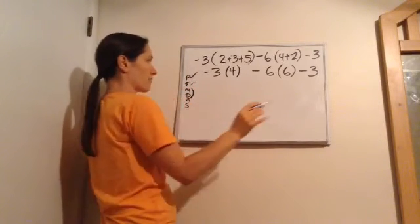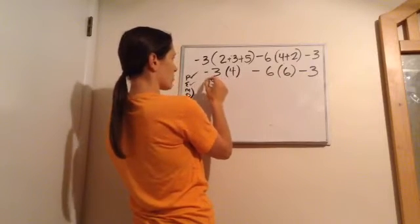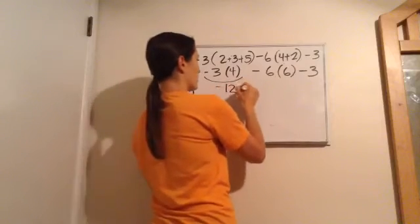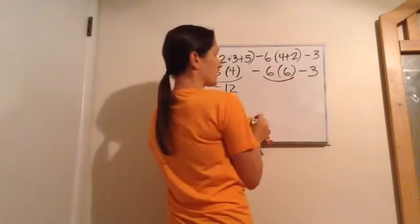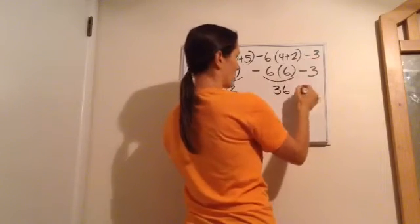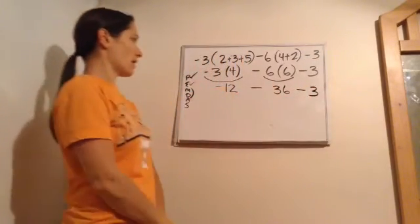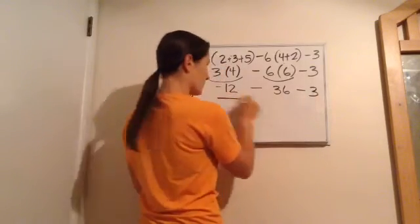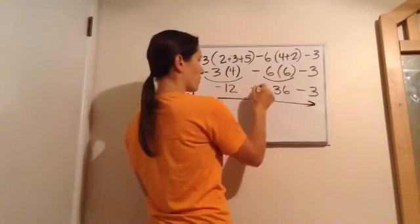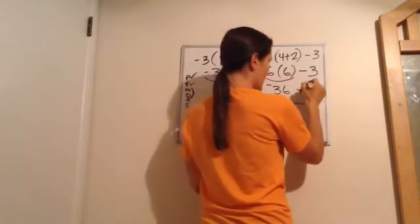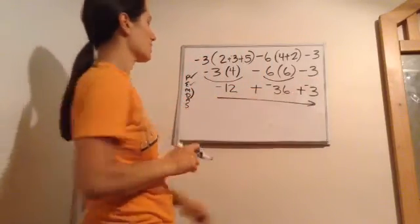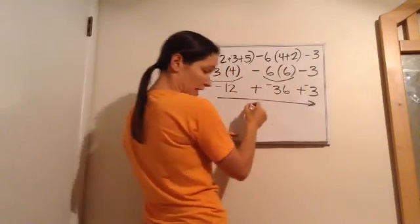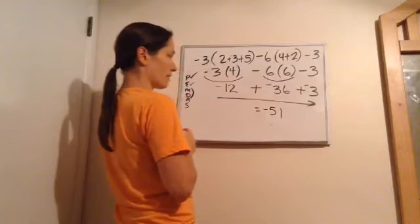Done with parentheses, no exponents. Now multiply or divide left to right: −3 × 4 = −12. Then 6 × 6 = 36. Bring everything else down. Now add or subtract left to right: −12 + (−36) + (−3) — changing minuses to plus negatives. The final answer is −51.